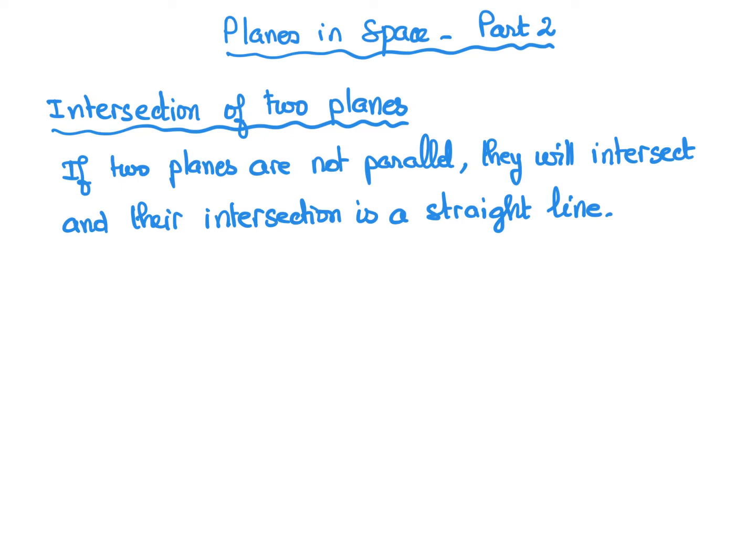In the second part of this lecture on planes in space, we will take a look at the intersection of two planes. In general, if two planes are not parallel, they will intersect and their intersection will be a straight line.